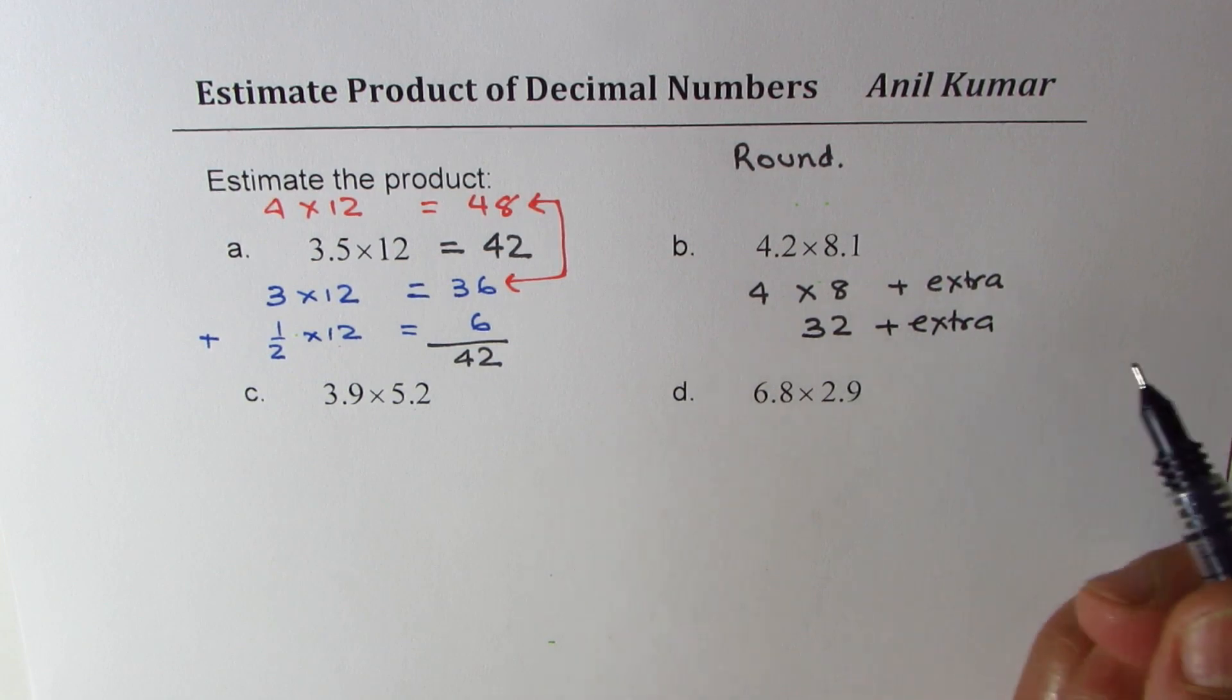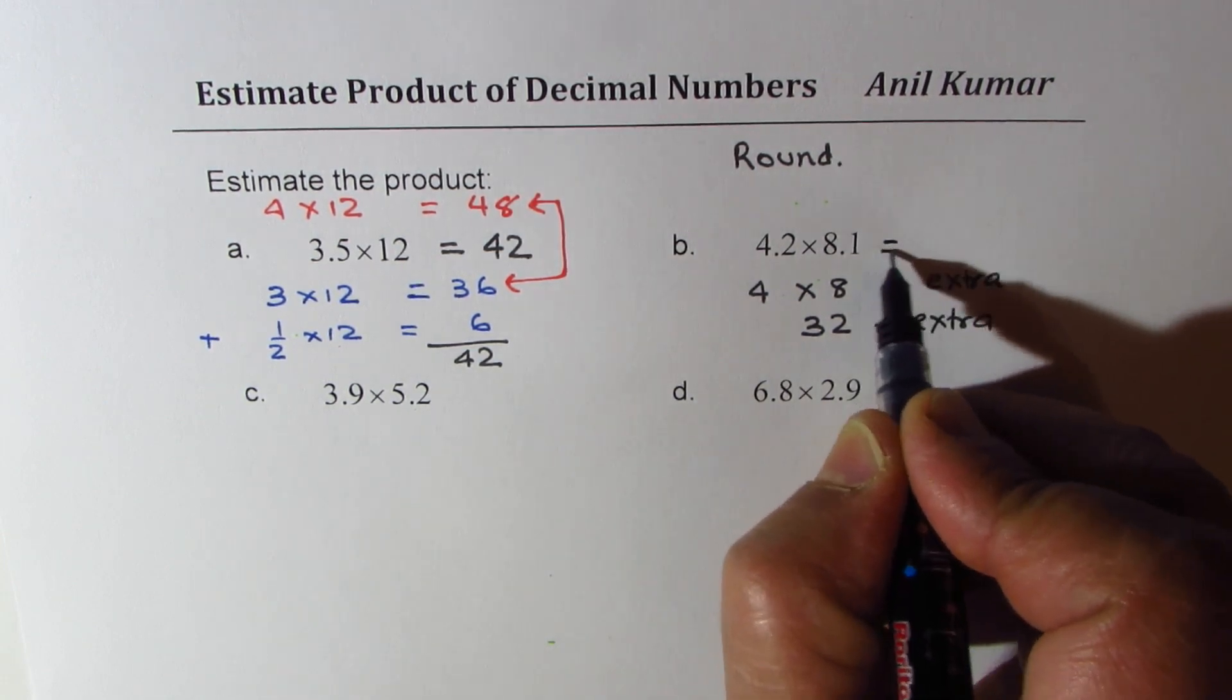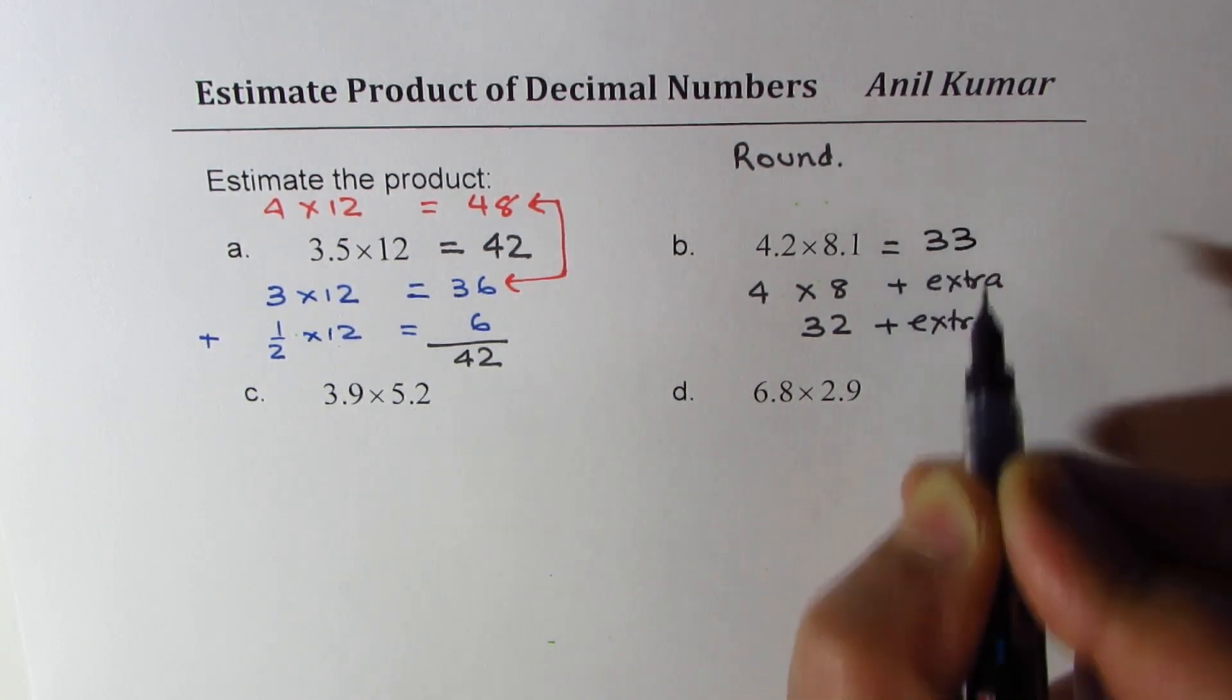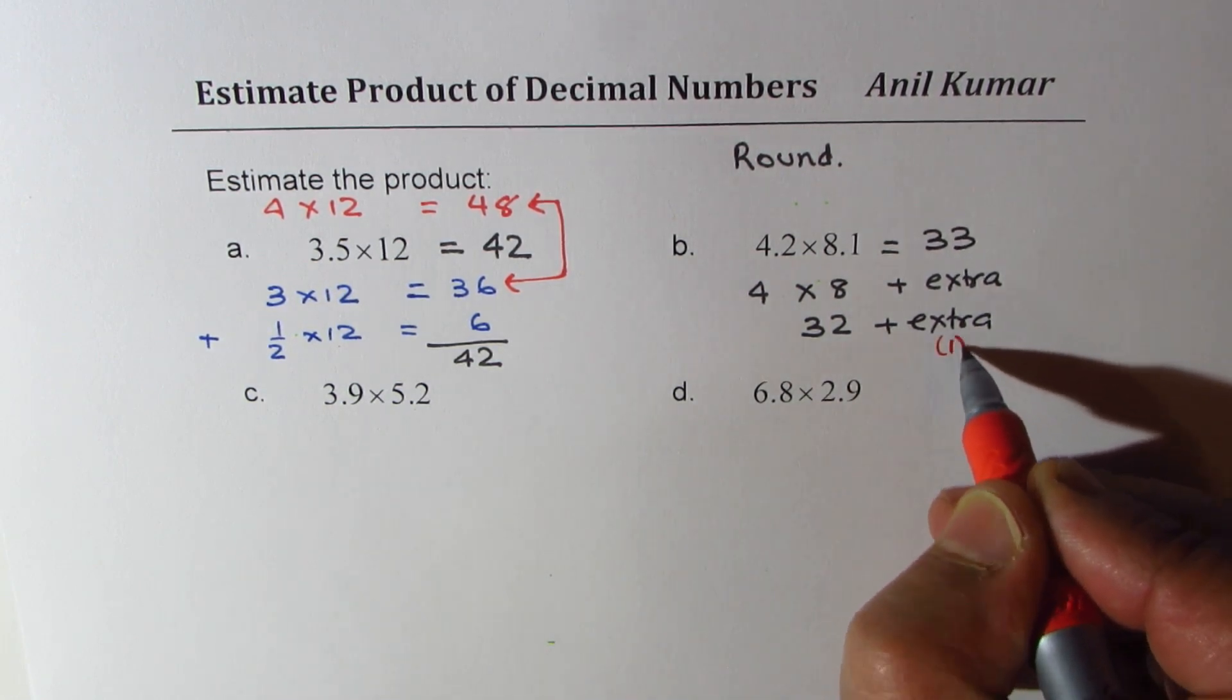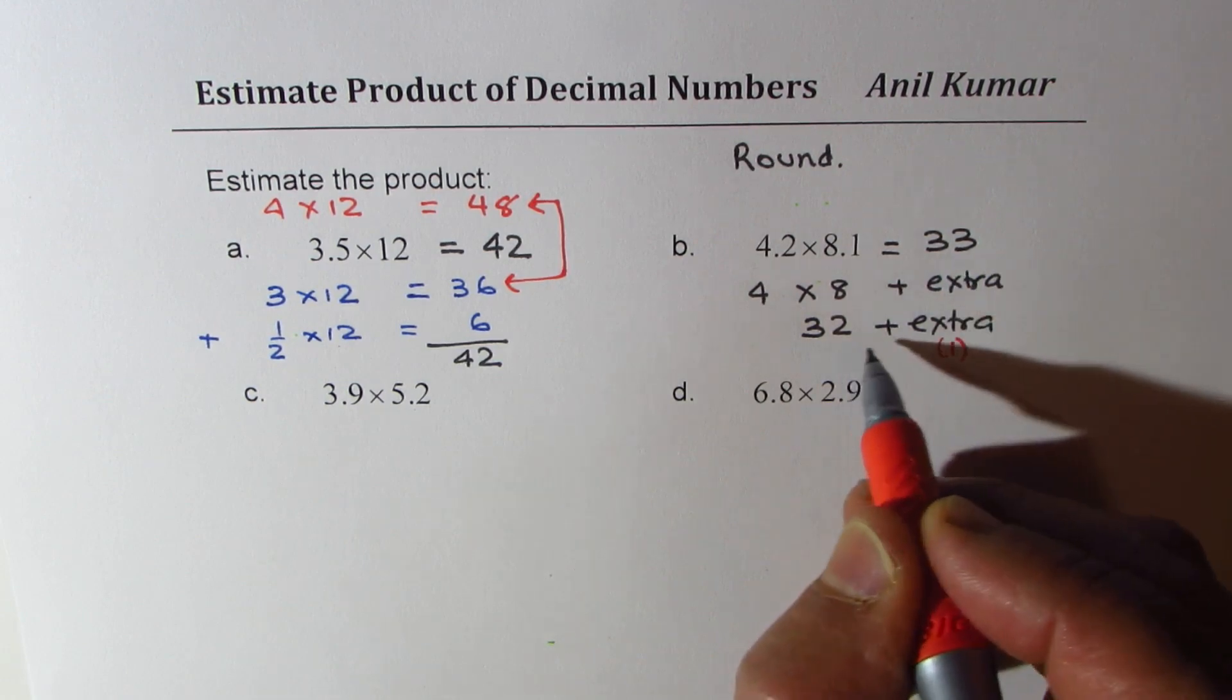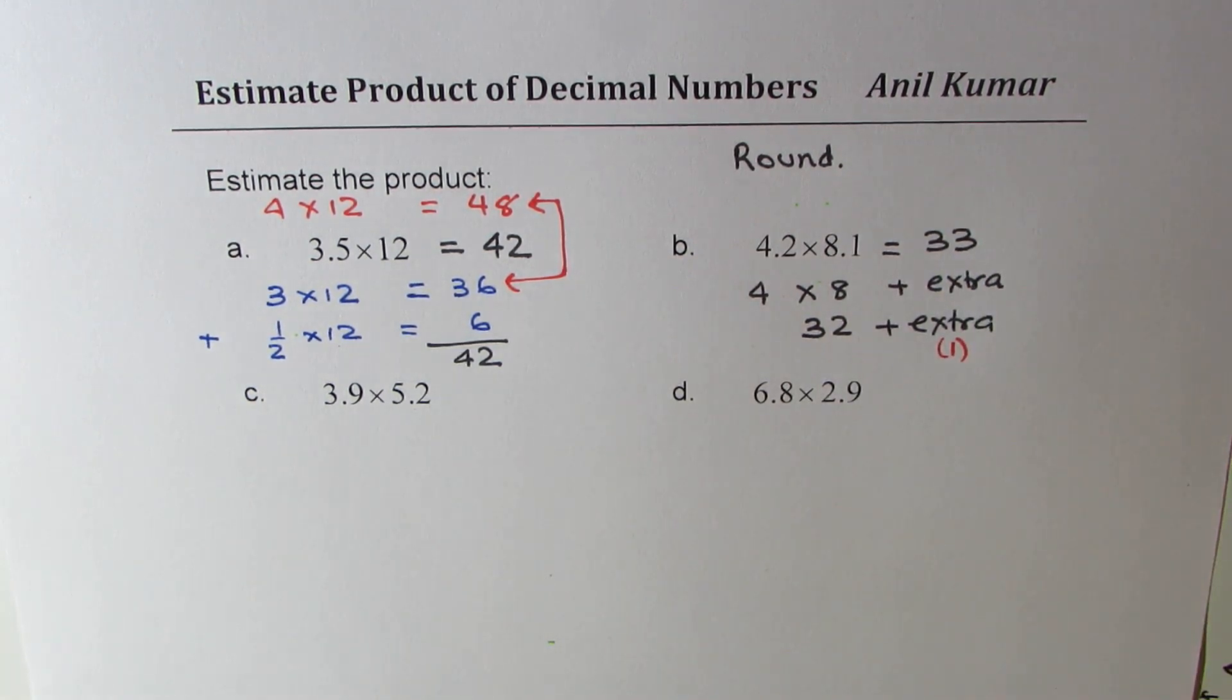So we could take extra as 1, for example. So we could write this as 33. That extra, I have taken as 1 and written this as 33. So we could do something like this also.